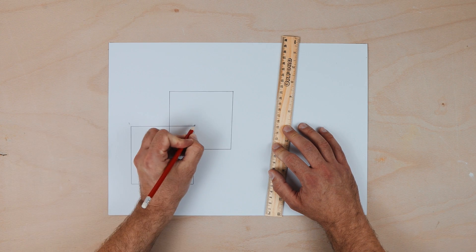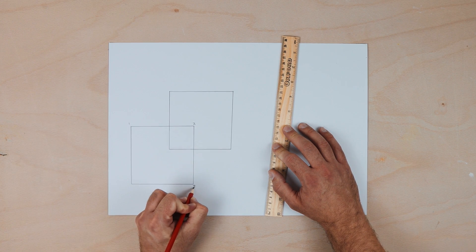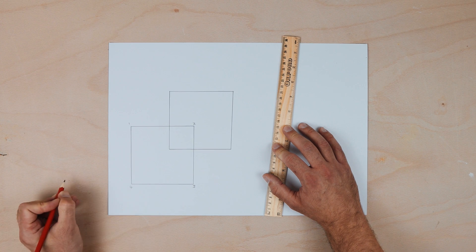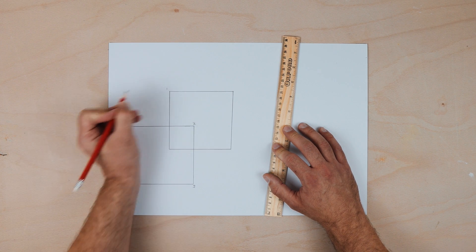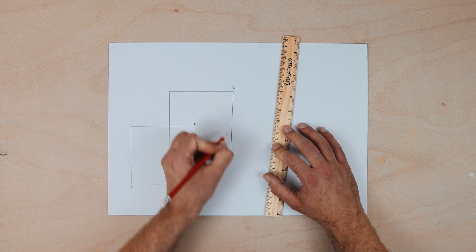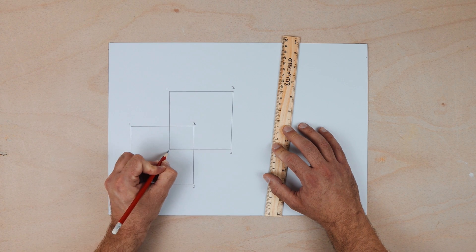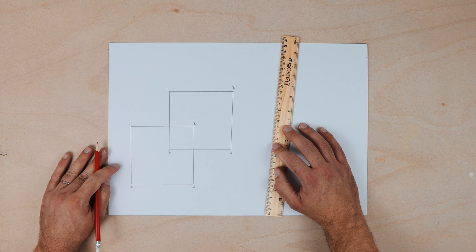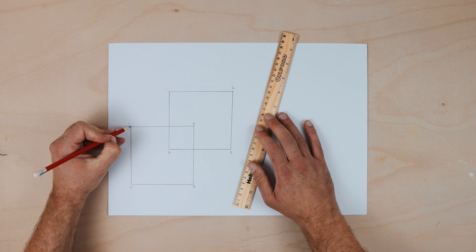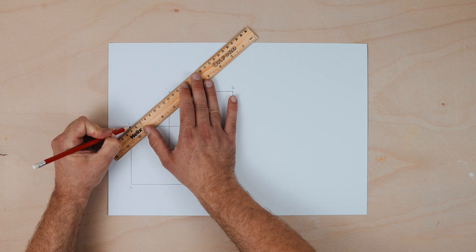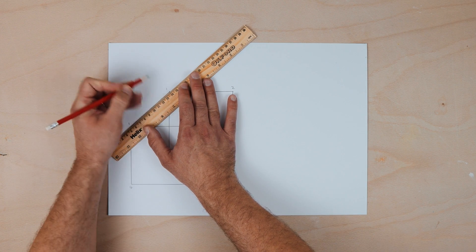And then all you need to do is number each corner from one to four on both squares. This is quite important early on because it really helps the pupils remember where to draw their lines to because all you're going to do is draw a line from one to one, two to two, three to three and four to four. It really is that easy.